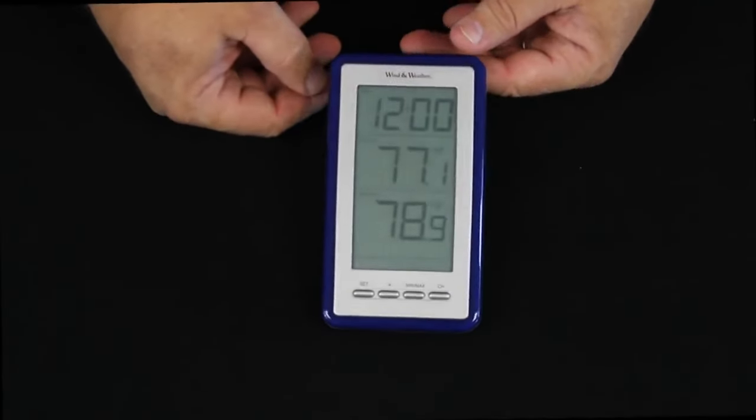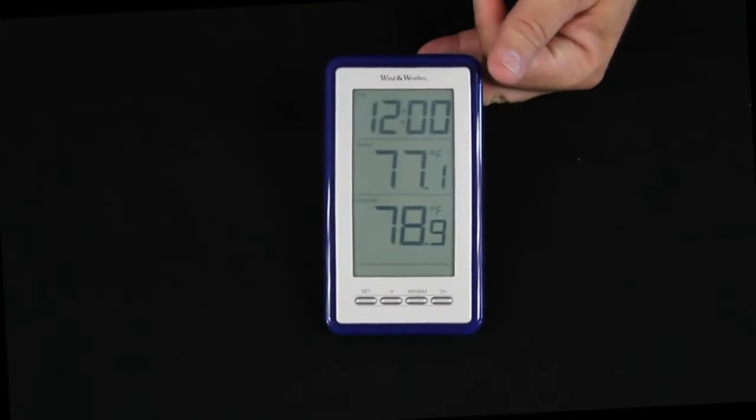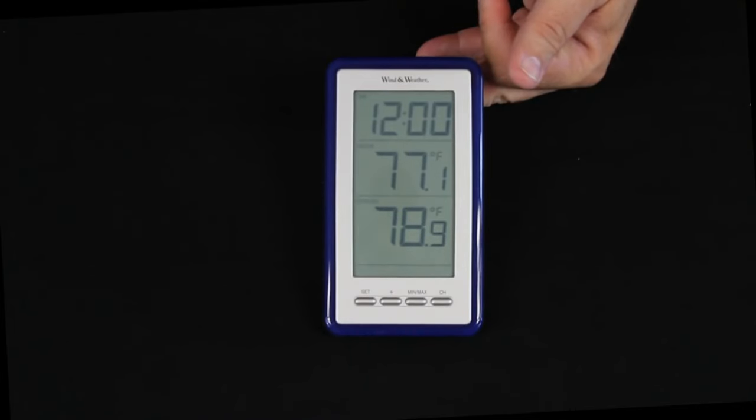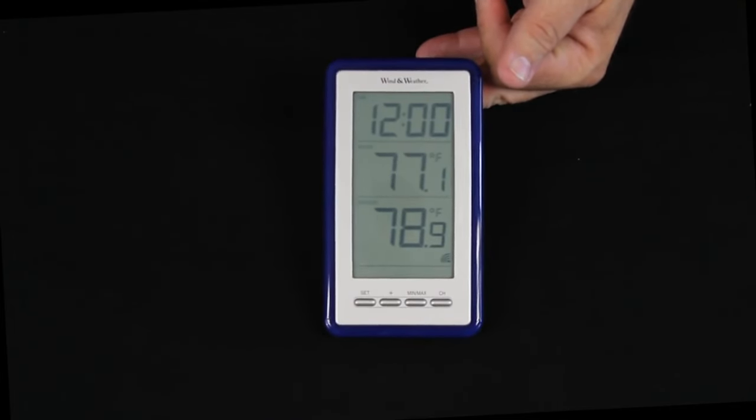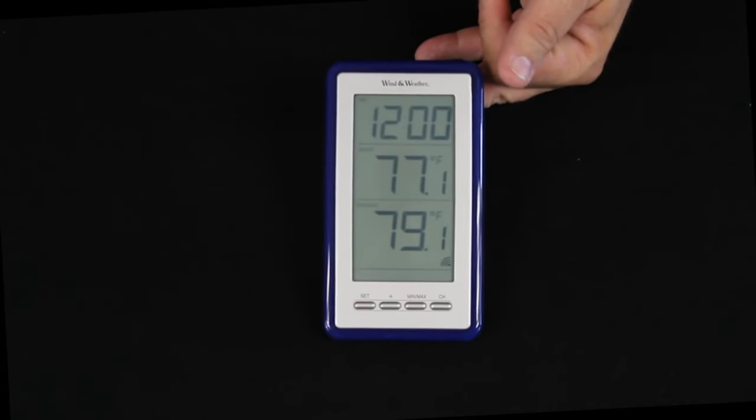Outdoor sensors are often used by people for monitoring the garage, monitoring the outdoor temperature obviously, but we also have customers who've used them to monitor their wine cellars, to monitor the temperature in arboretums and greenhouses, and just to monitor the temperature in other rooms of the house.